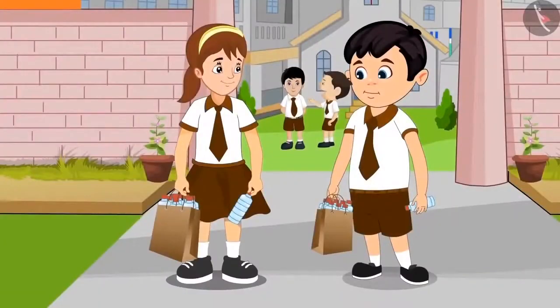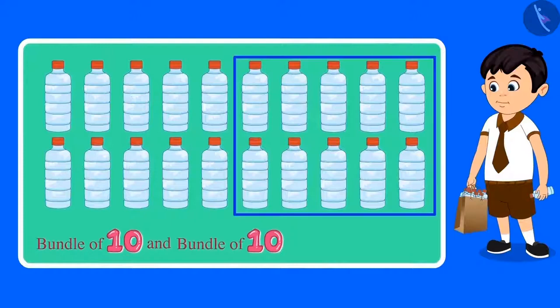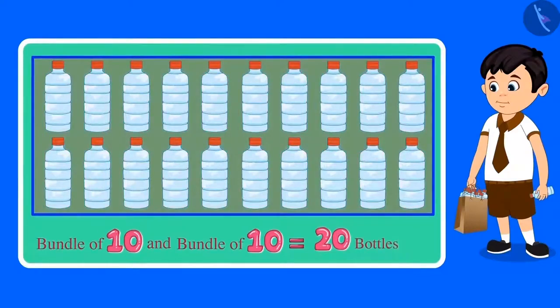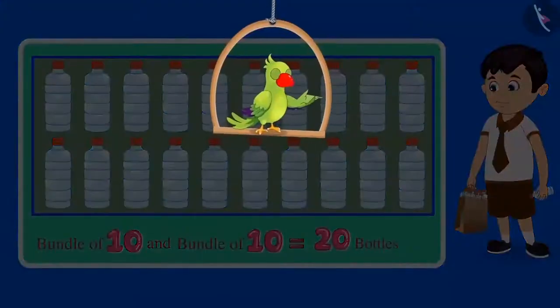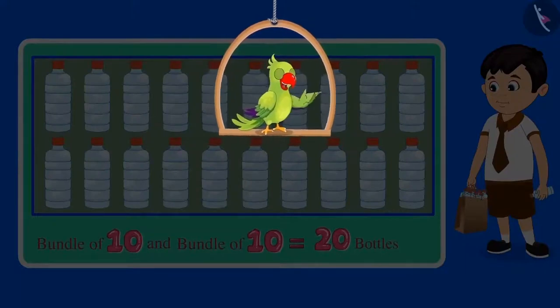Even you counted in the same way, right? Now let us count the number of bottles that Chotu has collected. This is one bundle of 10 bottles and this is another bundle of 10 bottles — 2 bundles of 10 — so these are 20 bottles. Chotu has collected a total of 20 bottles. By making a bundle of 10, we can count any number between 9 and 20. That was all for today.